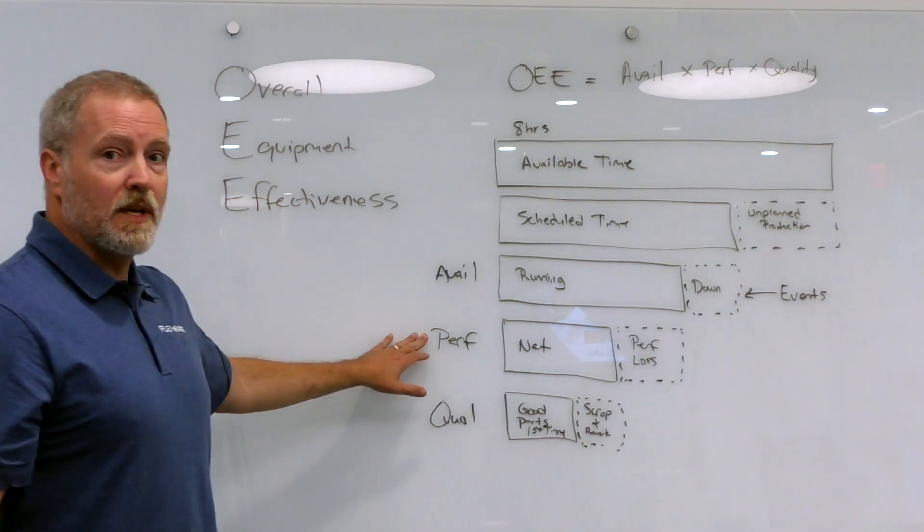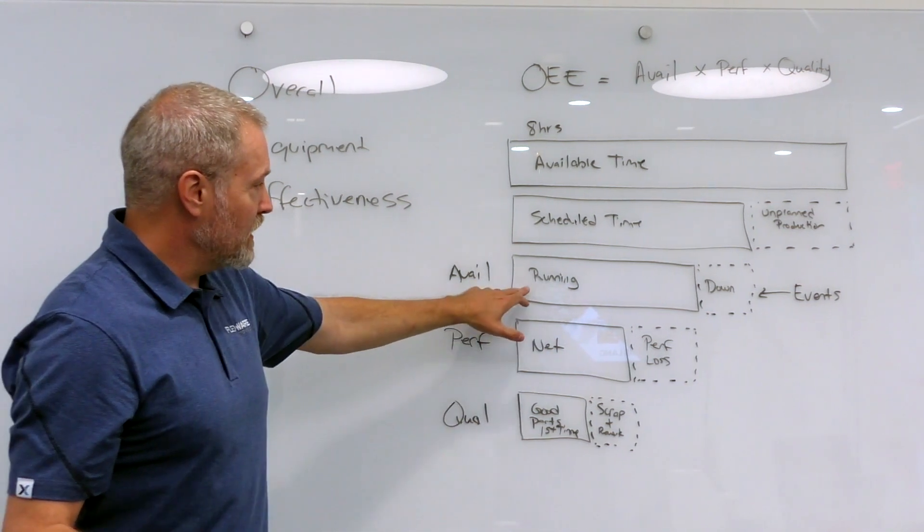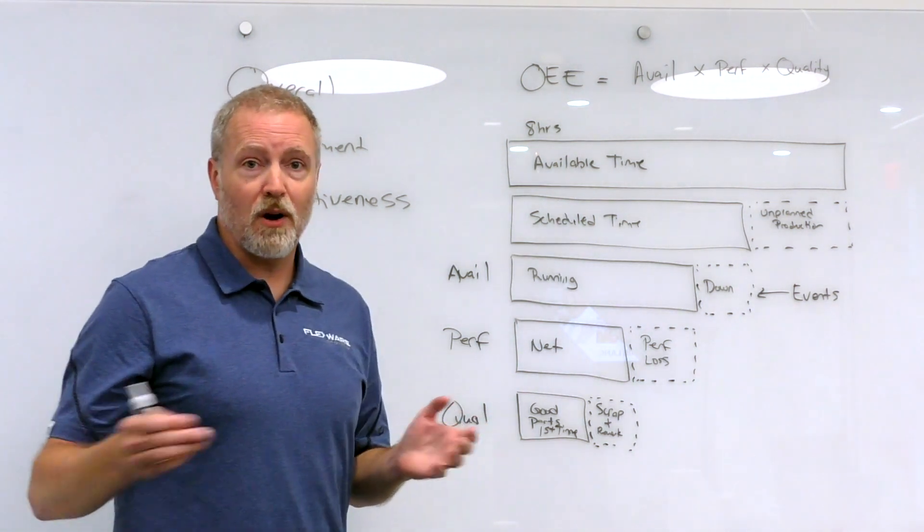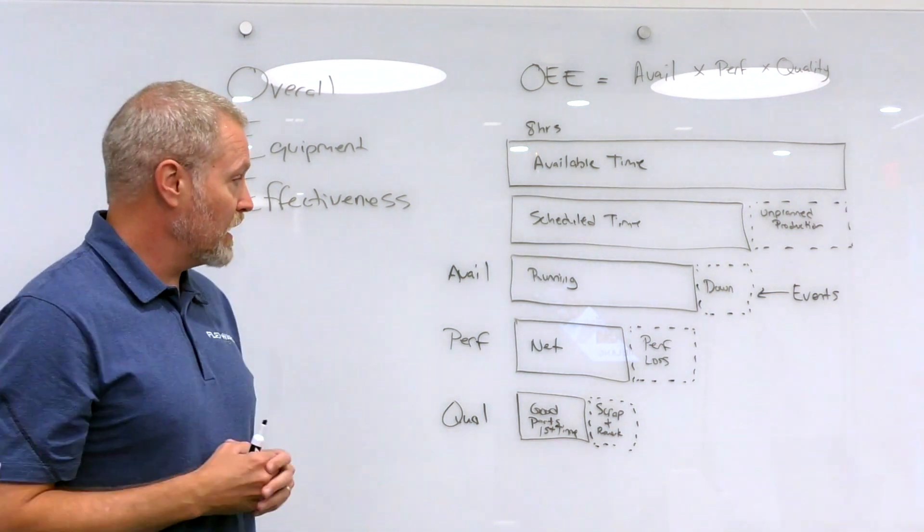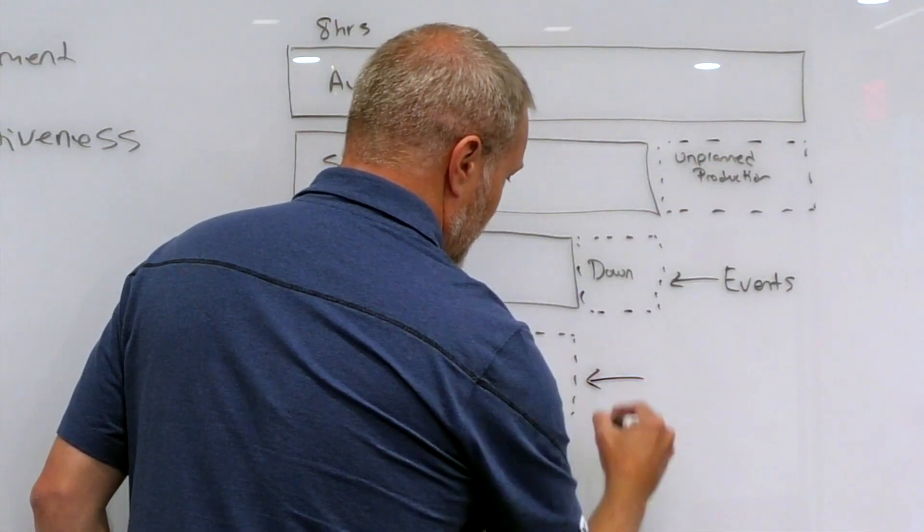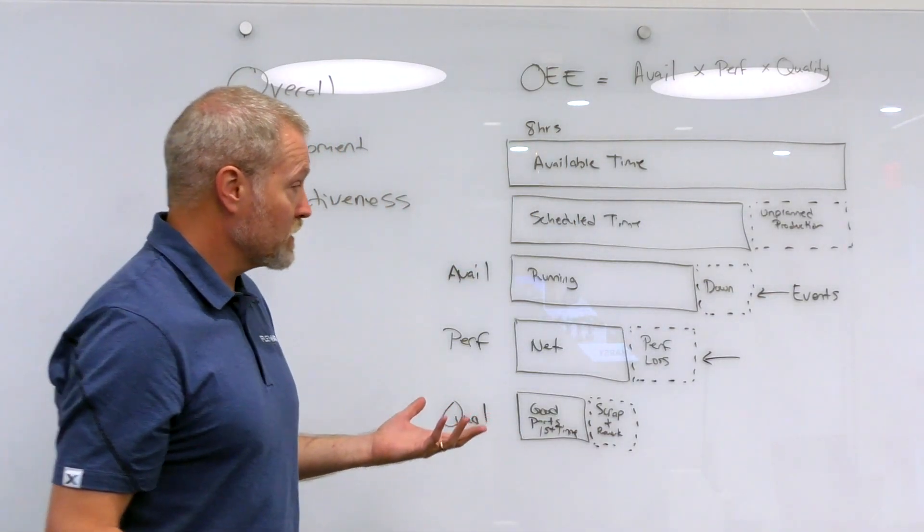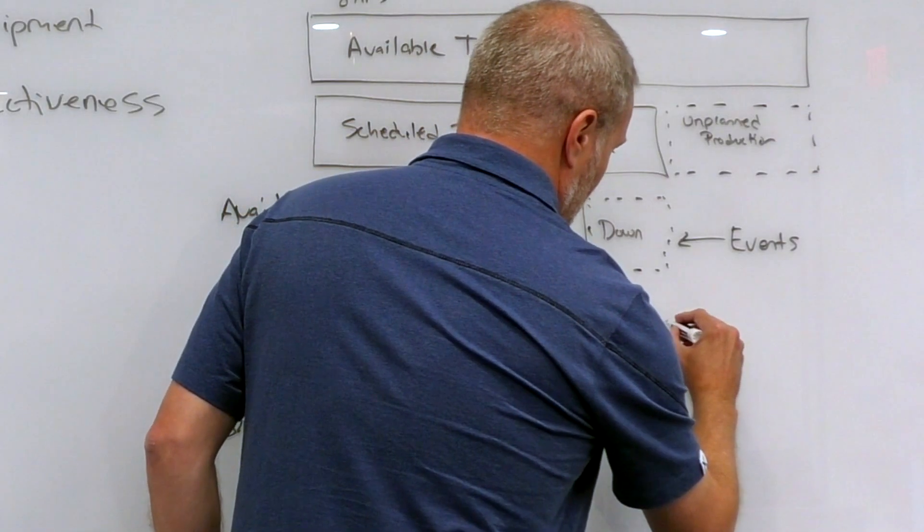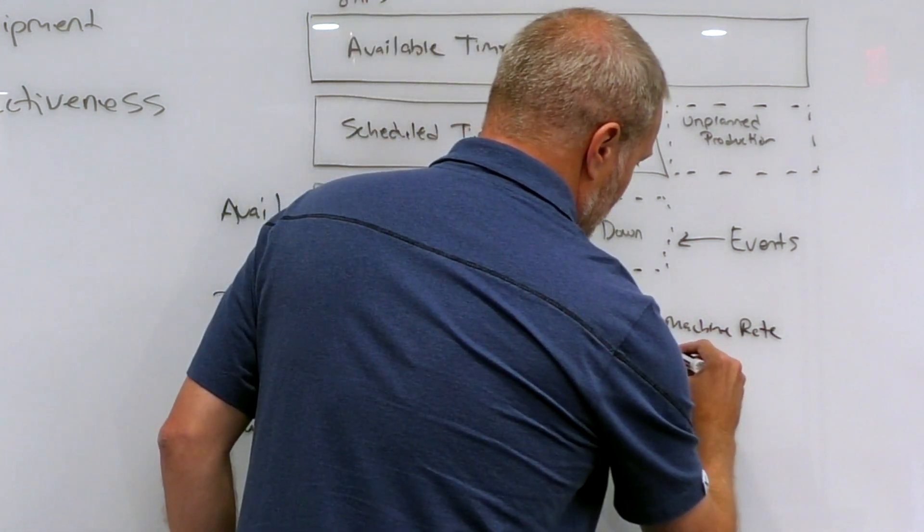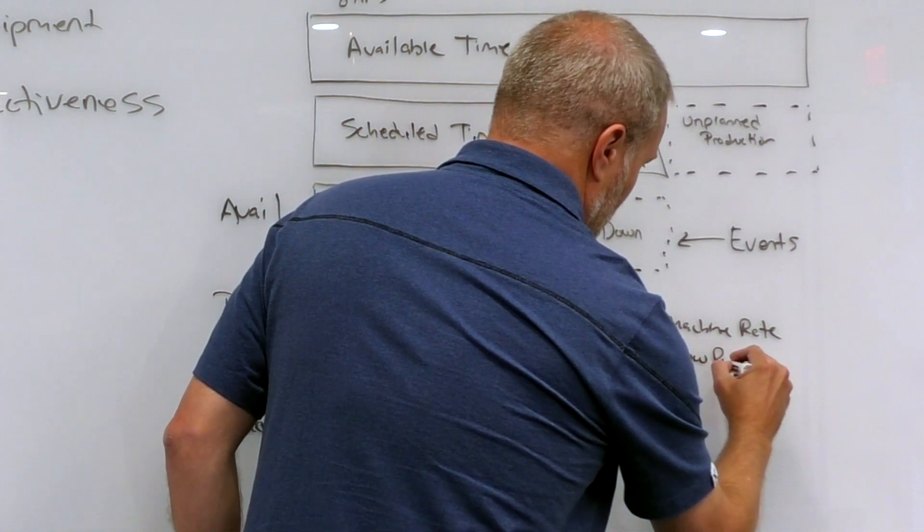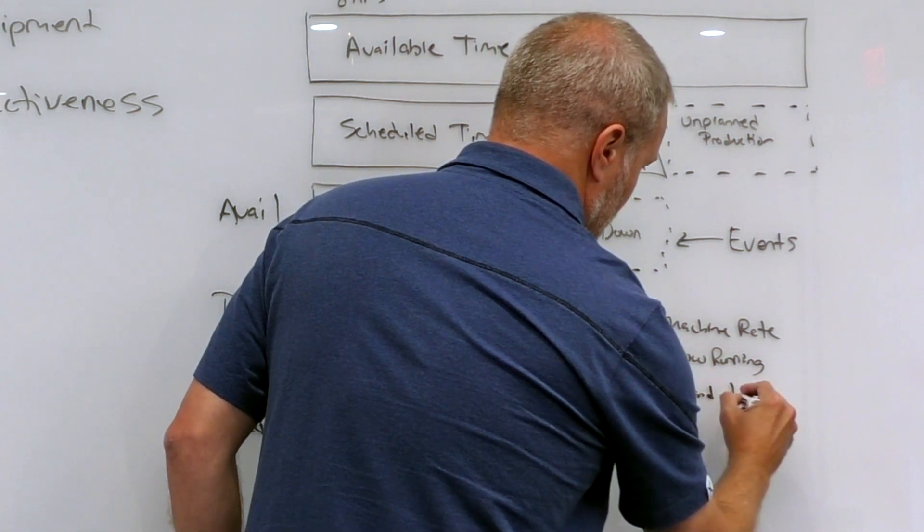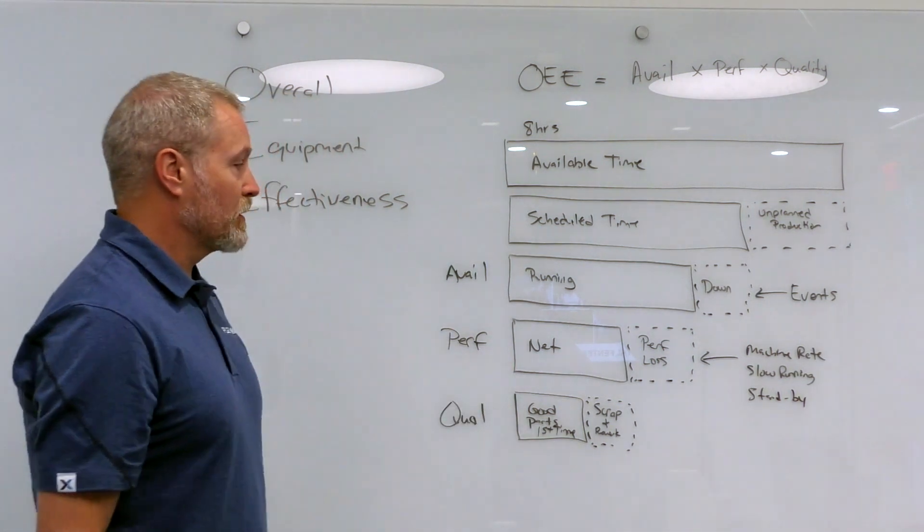Performance loss, typically we calculate that based off of we take this running time times our ideal rate of production, and we say we should have been able to produce this number of parts in this period time. If we didn't, that delta is our loss. But we also have a bunch of events here that tell us why we have that performance loss. It could be the machine rate, so somebody chose to dial it back. It could be slow running events. It could be standby. All of these things could factor into performance.